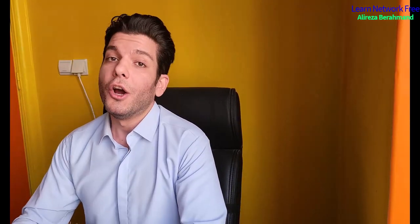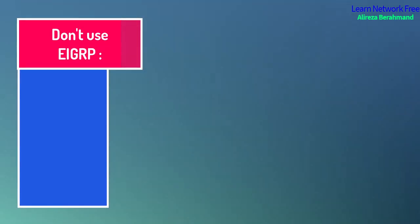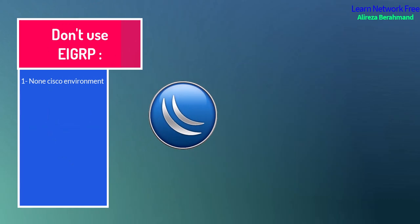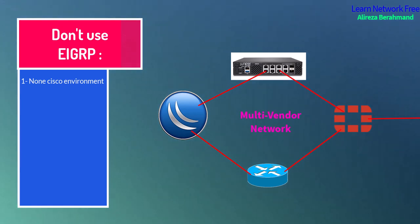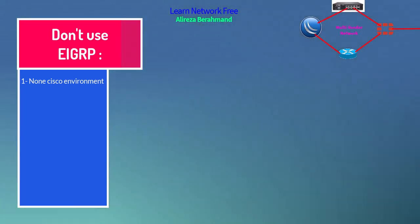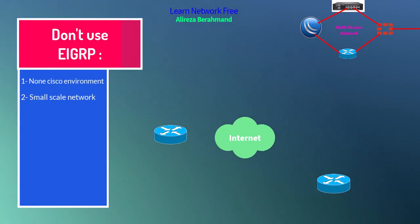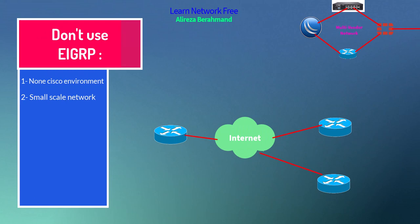Now I want to explain when you should NOT use EIGRP. Implementing EIGRP in the wrong situation causes waste of time, energy, and resources. Number one: in non-Cisco environments. EIGRP is a Cisco proprietary protocol, so networks with a mix of different vendor equipment may not support it. Number two: small networks — for simple topologies, protocols like RIP could be more appropriate due to their simplicity.